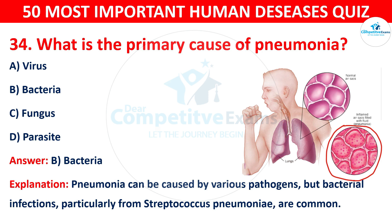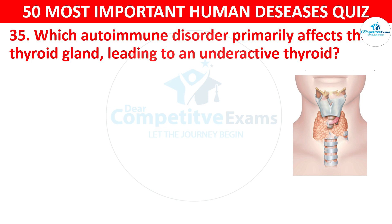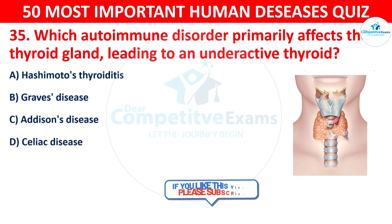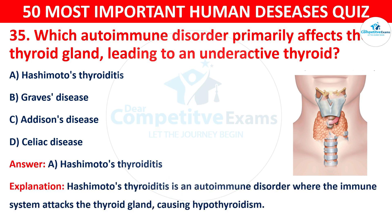Question 35: Which autoimmune disorder primarily affects the thyroid gland, leading to an underactive thyroid? The options are: A) Hashimoto's Thyroiditis, B) Graves' disease, C) Addison's disease, or D) Celiac disease. The correct answer is A — Hashimoto's Thyroiditis. Hashimoto's Thyroiditis is an autoimmune disorder where the immune system attacks the thyroid gland, causing hypothyroidism.